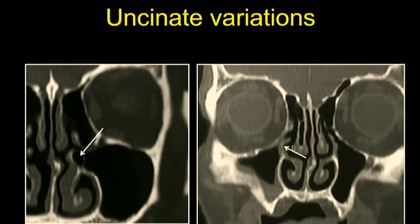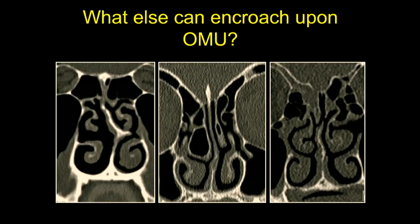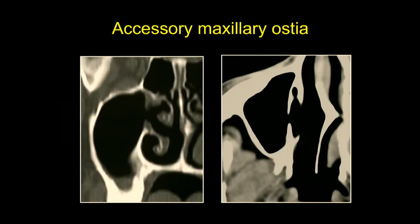An atelectatic uncinate is also associated with silent sinus syndrome. Other causes of osteomeatal unit encroachment include a deviated septum with a large spur, concha bullosa, and lamellar concha — the lamellar concha not involving the bulbous part of the turbinate generally does not have a significant physiological impact. A paradoxical curvature of the turbinate is another variation we see day in and day out on our PNS scans.